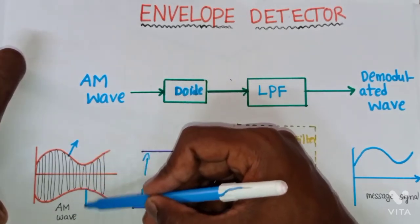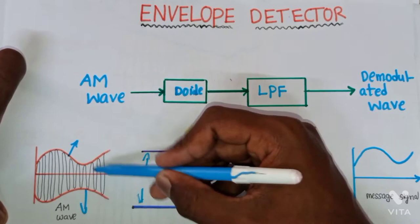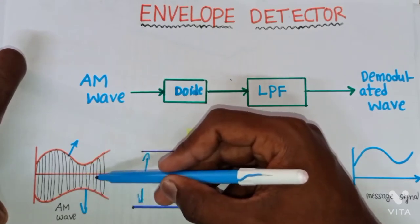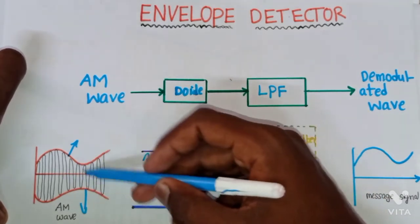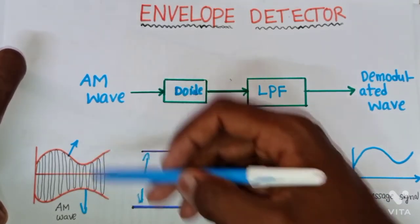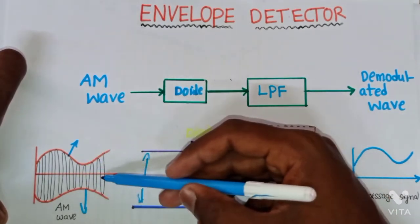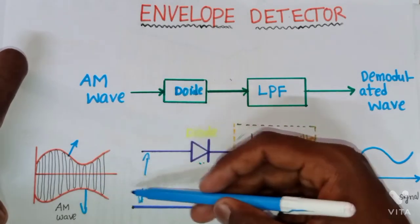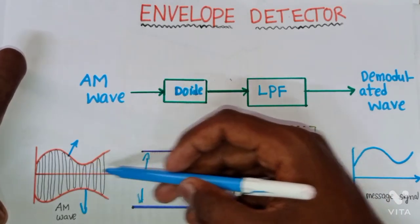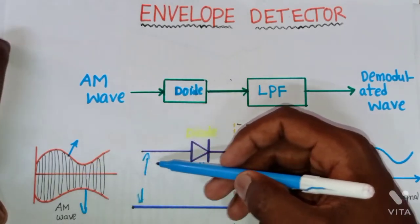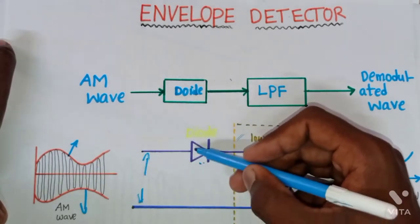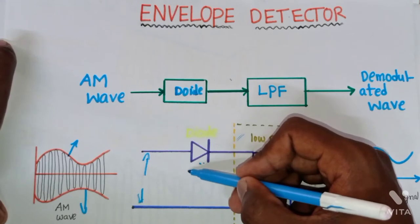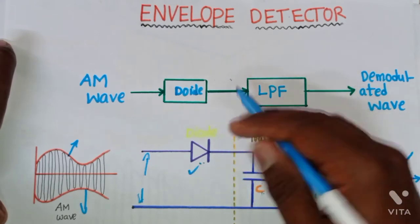Between the upper and lower sidebands, we have the carrier varying according to these sidebands. When we pass this AM modulated wave through this circuit, the diode first acts as a rectifier.